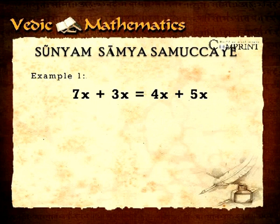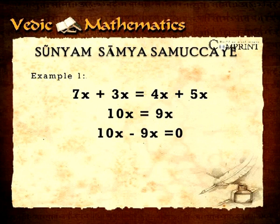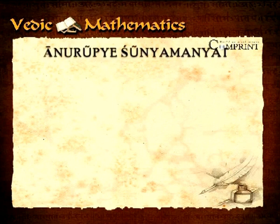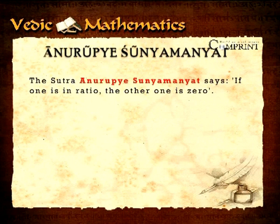This is applicable not only for x but also any such unknown quantity. Anurupye Shunyamanyat. The sutra Anurupye Shunyamanyat says if one is in ratio, the other one is zero.